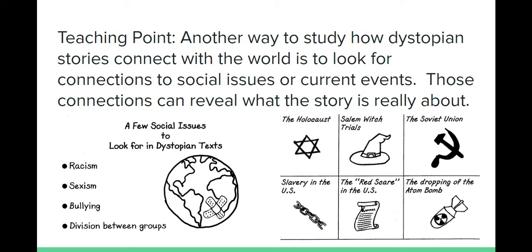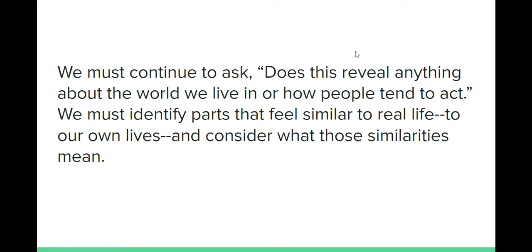Another way to study how dystopian stories connect with the world is to look for connections to social issues, current events, or historical events — and those connections can reveal what the story is really about. Some social issues that might turn up in your dystopian books are racism, sexism, bullying, division between groups, and classism. Many popular historical events recreated in dystopian fiction include the Holocaust, the Salem witch trials, slavery, and the dropping of the A-bomb. When we come across these things, we need to consider: does this reveal anything about the world we live in or how people tend to act? We must identify parts that feel similar to real life and consider what those similarities mean.